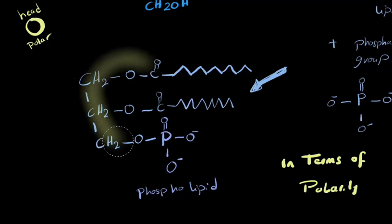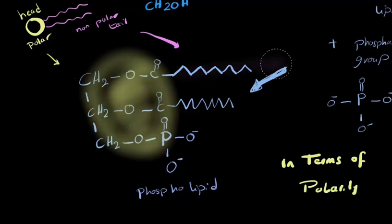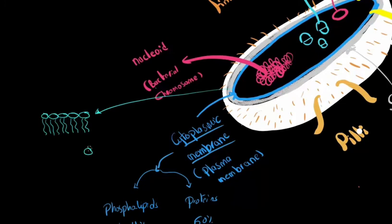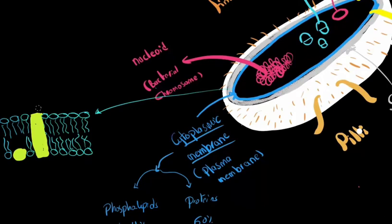In terms of polarity, the phospholipid has a polar head — the glycerol and phosphate portion marked in yellow — which is hydrophilic with many OH groups. It also has two non-polar tails — the fatty acid carbon chains shown in pink. This phospholipid molecule spontaneously arranges itself into a bilayer: the non-polar tails face each other, while one polar head faces outside the cell and the other faces inside the cell.